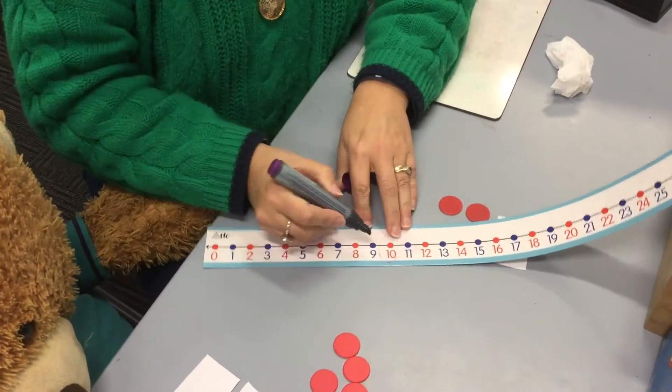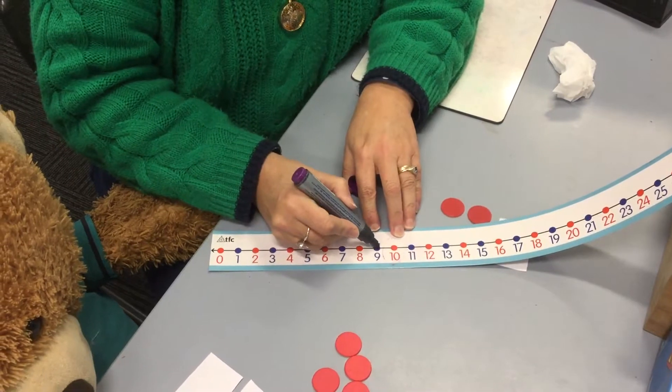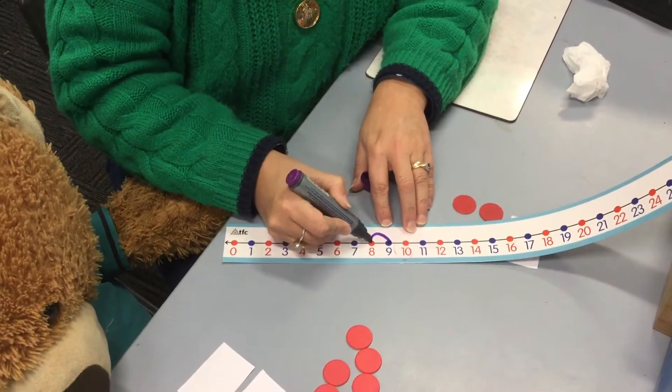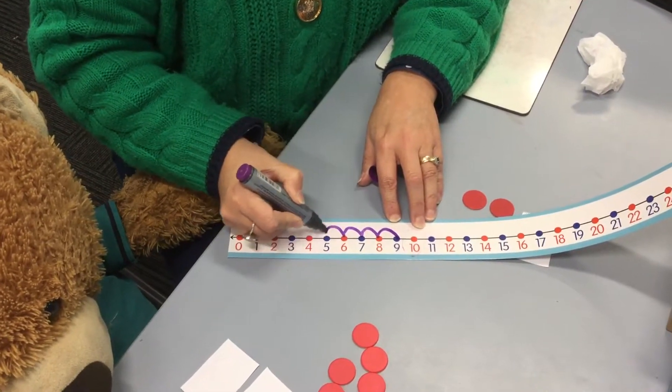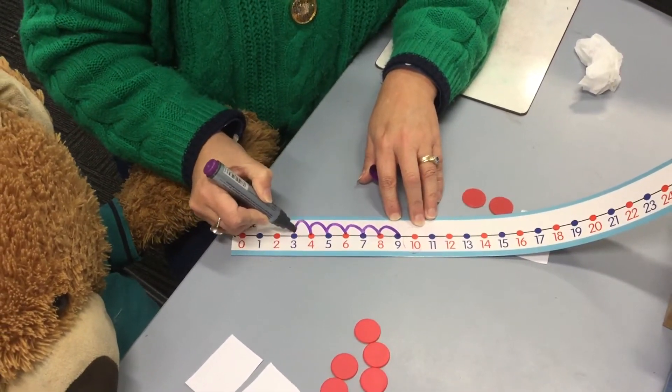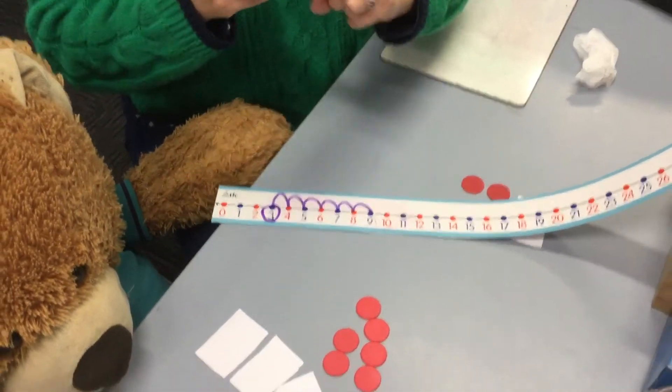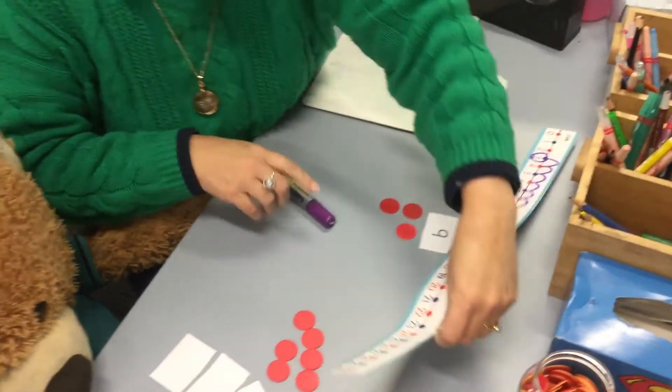All right, so if I've taken six away from nine, that leaves me with how many left? Three. Now if we did that on the number line like we did before, let's pop it here. You would start at nine and you would go how many? Six. Thank you for reminding me. Two, three, four, five, six. And then that leaves you with three.